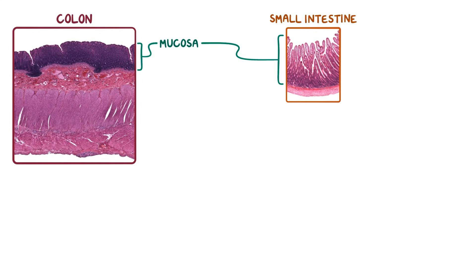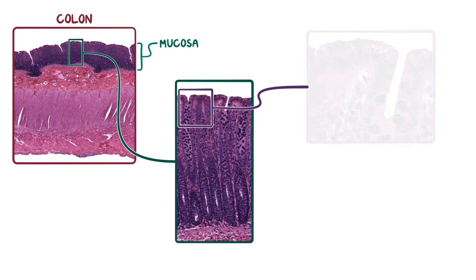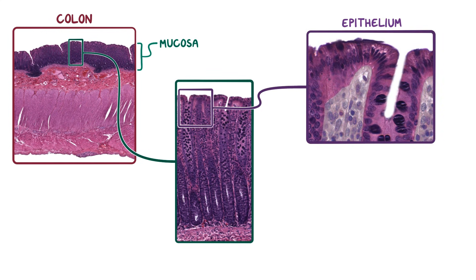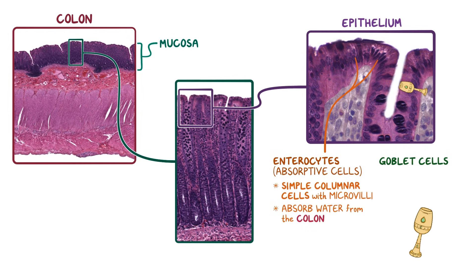Taking a closer look at the colon's mucosa, the lumen of the colon is seen at the top of the image, and the first layer of cells lining the mucosa is the epithelium. The epithelium consists of two types of cells: enterocytes and goblet cells. The enterocytes, or absorptive cells, are the simple columnar cells with microvilli, responsible for absorbing water from the colon lumen. The goblet cells are responsible for secreting mucus, which is easily seen as globular structures stained dark purple from the hematoxylin and eosin stain.